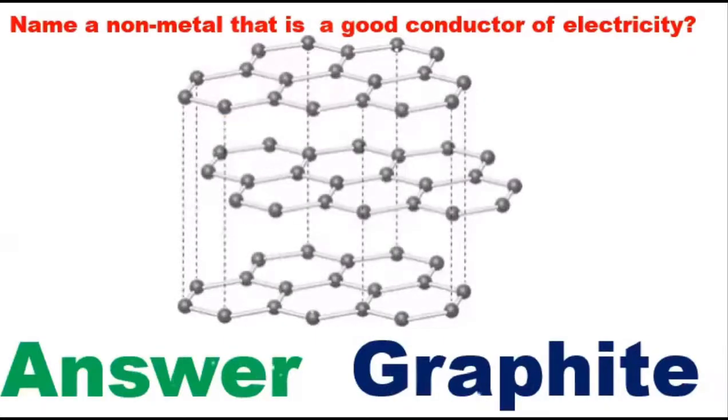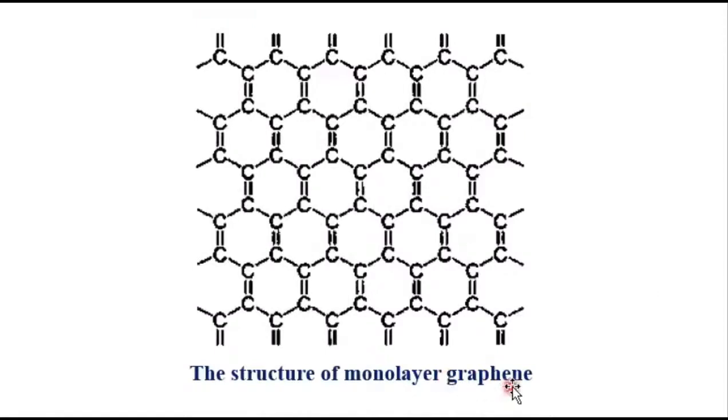Graphite is the only non-metal element that is a good conductor of electricity. Graphene conducts electricity also, but it is simply one atomic layer of graphite, a layer of sp2-bonded carbon atoms arranged in a hexagonal or honeycomb lattice.